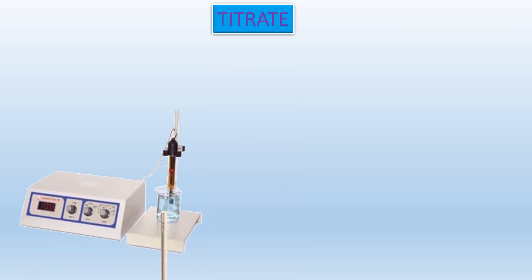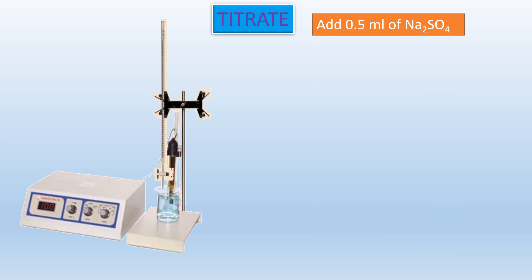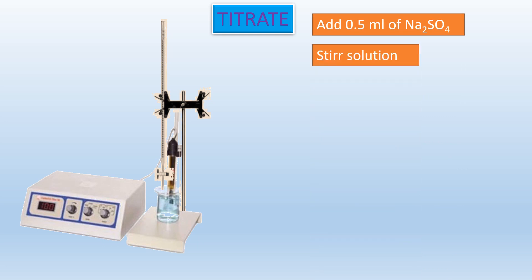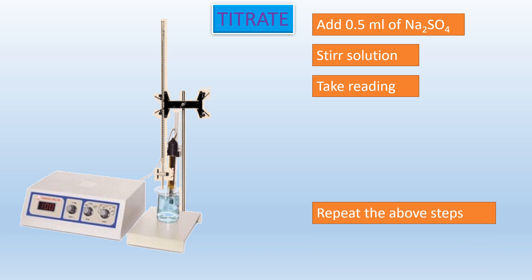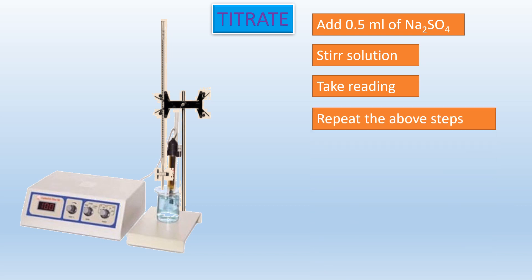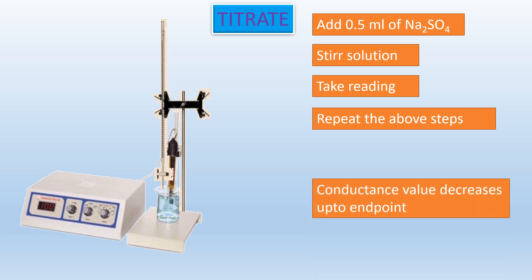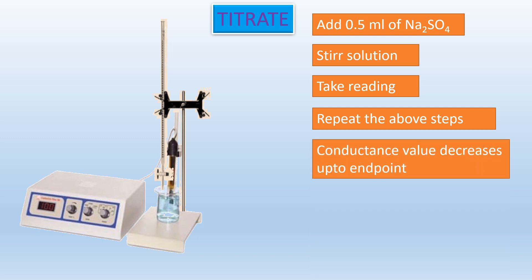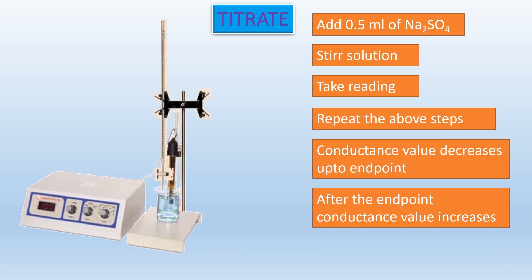Now let us titrate. Add 0.5 ml of sodium sulphate, stir nicely, then take the reading. Repeat the above step — again add 0.5 ml of sodium sulphate, stir nicely, and take the reading. The conductance value decreases up to the end point.